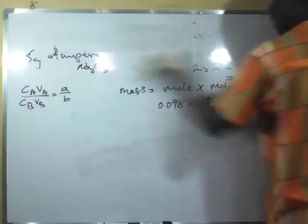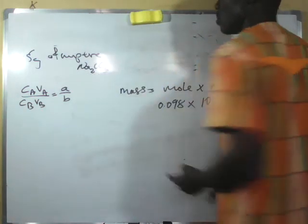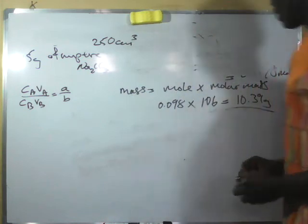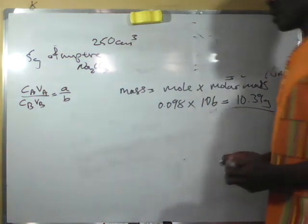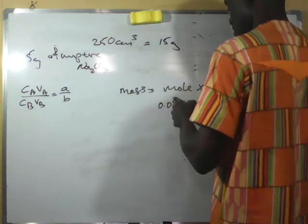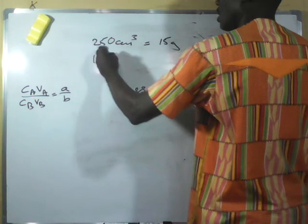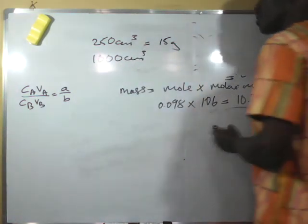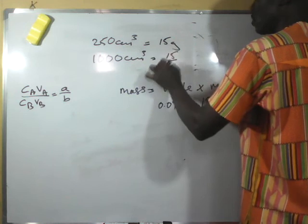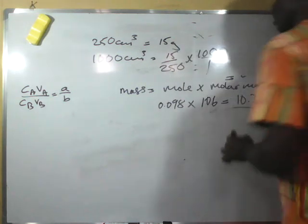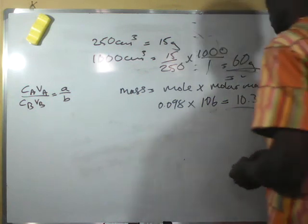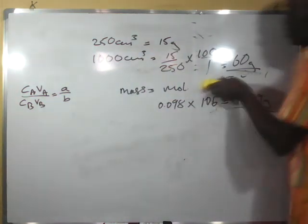Now we need to get something clear. This 15 grams is dissolved in 250 cm³. We need to find what mass corresponds to 1000 cm³ (1 dm³). Since 250 cm³ = 15 g, then 1000 cm³ = (15/250) × 1000 = 60 grams. So there are 60 grams per dm³.